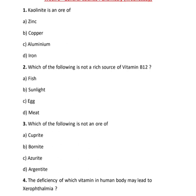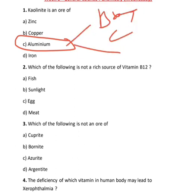Kaolinite is an ore of zinc, copper, aluminum, or iron? The correct option is aluminum. Aluminum is found in important ores like bauxite, cryolite, and corundum.